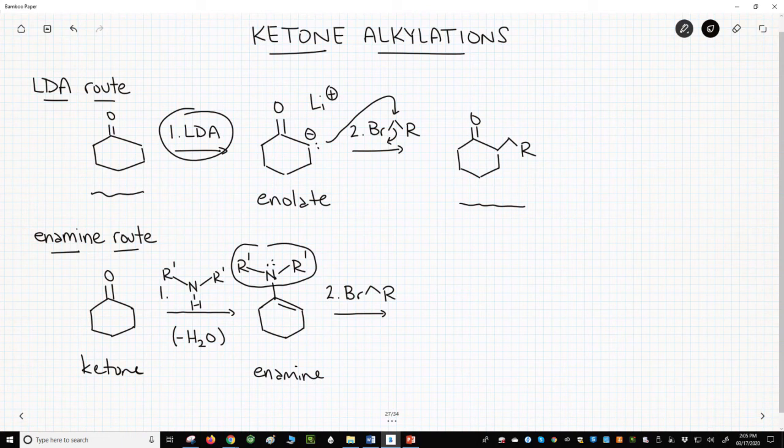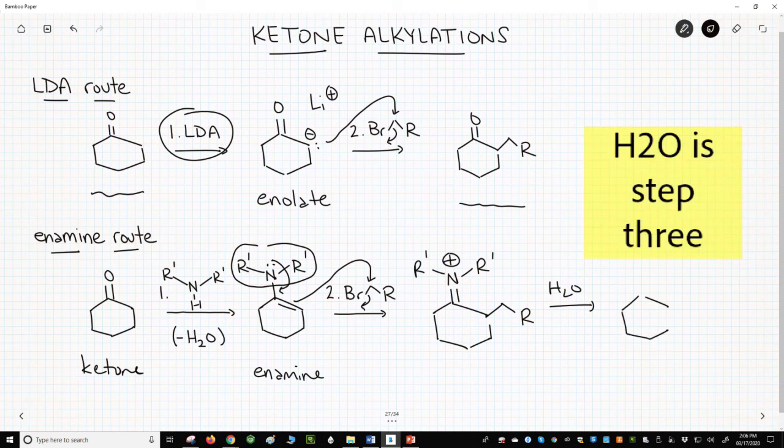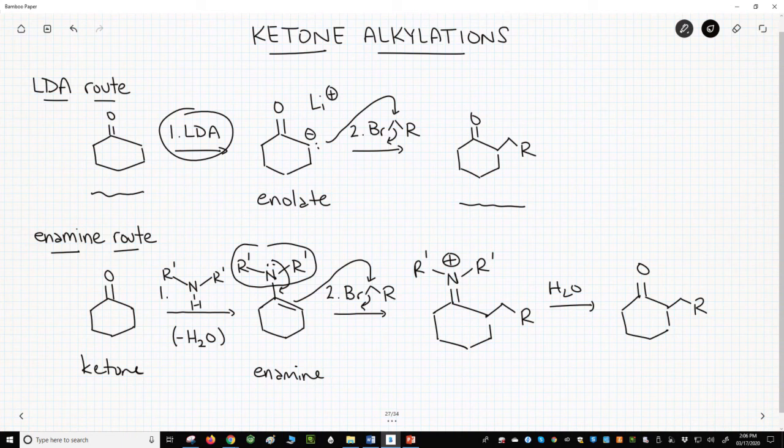The lone pair on nitrogen swings down, breaks the C-C pi bond, and attacks the alkyl halide. This forms an enaminium ion. The enaminium ion can be treated with water and hydrolyzed to give a ketone.